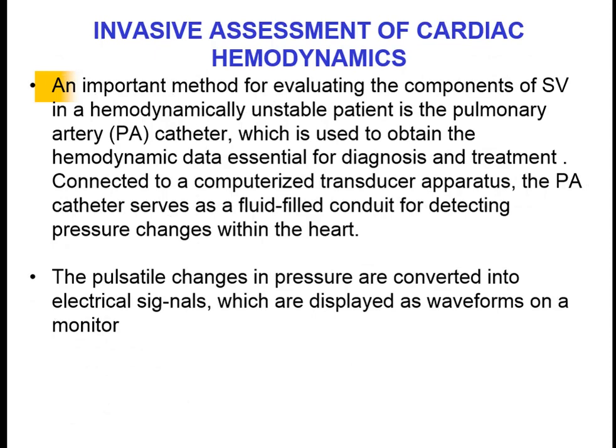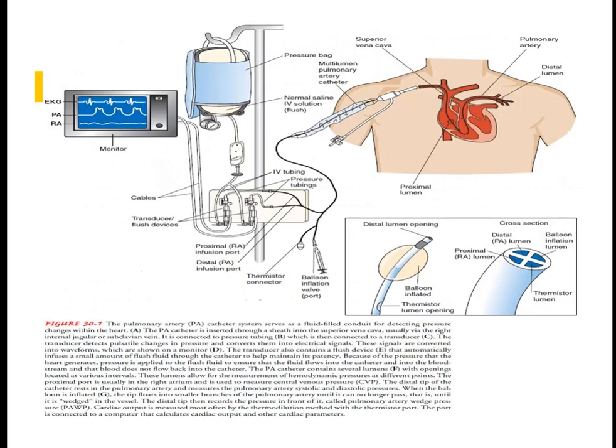Invasive assessment of cardiac tamponade is important. An important method for evaluating components of stroke volume in the hemodynamically unstable patient is the pulmonary artery catheter, which is used to obtain hemodynamic data. The pulmonary artery catheter checks stroke volume and hemodynamic status; changes in pressure are converted into electrical signals displayed as waveforms on the monitor.